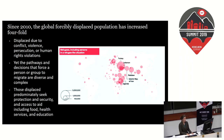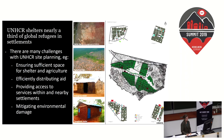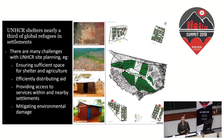If we look at a map of the refugee-hosting countries, Turkey, Pakistan, and Uganda are the three top leading refugee-hosting countries in the world. The majority of refugees are in sub-Saharan Africa, Southeast Asia, or the Middle East. UNHCR, the UN refugee agency, shelters nearly a third of the global refugee population in UNHCR-managed settlements.